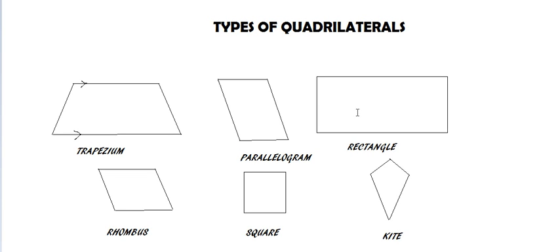Next is a rectangle. A rectangle is a special case of a parallelogram in which all the angles are equal to 90 degrees. As you can see, this angle is 90 degrees, and similarly all the other 3 angles are also 90 degrees.